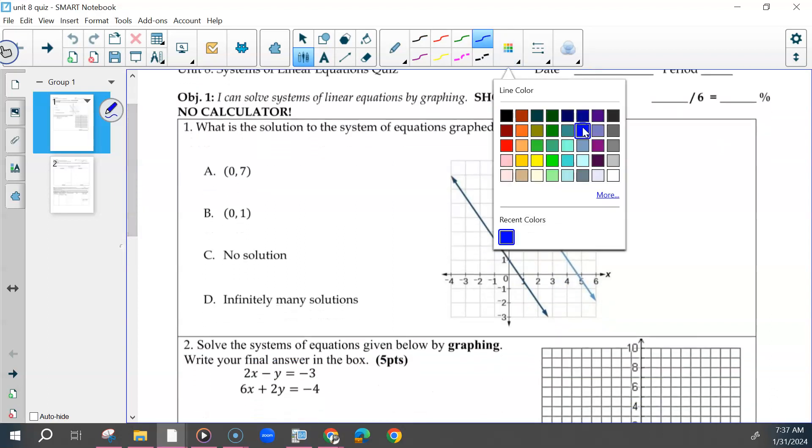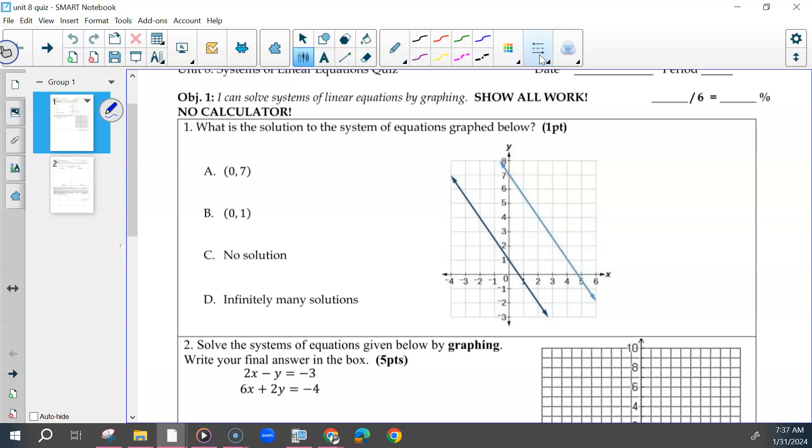For the first one, this should have been no solution. They don't cross. Most of you put that. I think there may have been a couple that put infinitely many, but that's only if they overlap. If they're not overlapping, that should not be the answer.